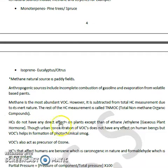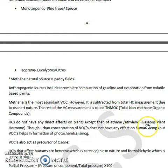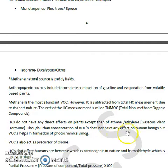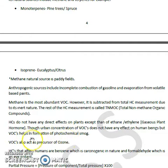Hydrocarbons do not have a direct effect on plants, except ethene, which is also called ethylene, and which is a gaseous plant hormone. Urban concentrations of VOCs do not have any direct effect on human beings. But VOCs — volatile organic compounds — for example, benzene, toluene, and ethylene, help and are perhaps essential in the formation of photochemical smog. That's why they are harmful.